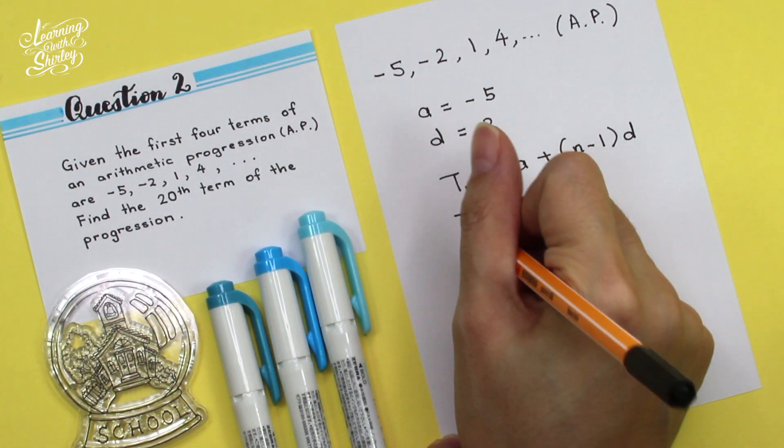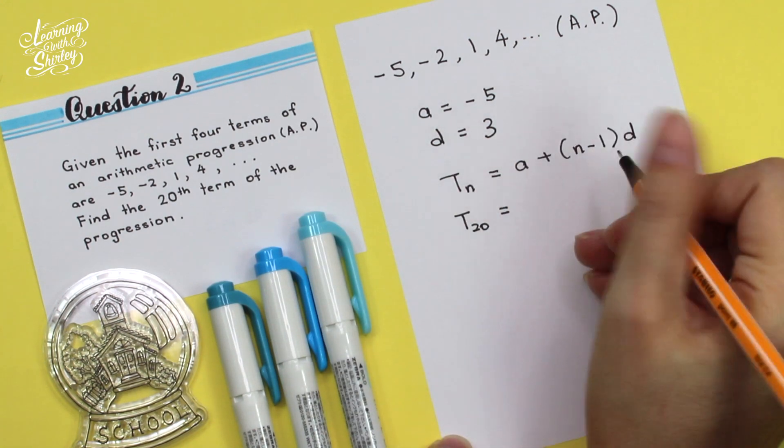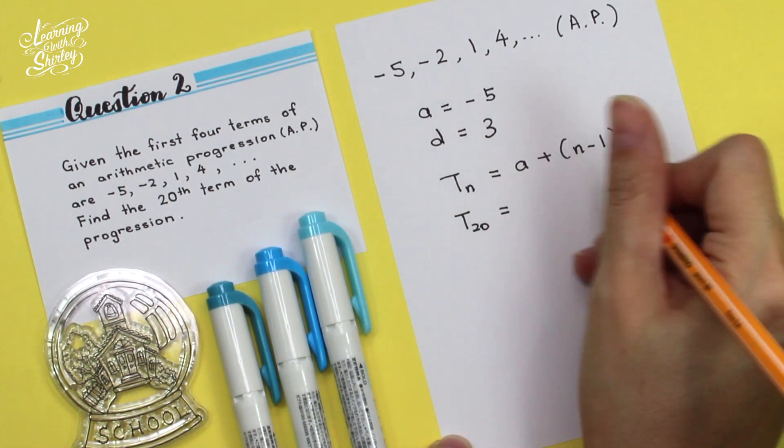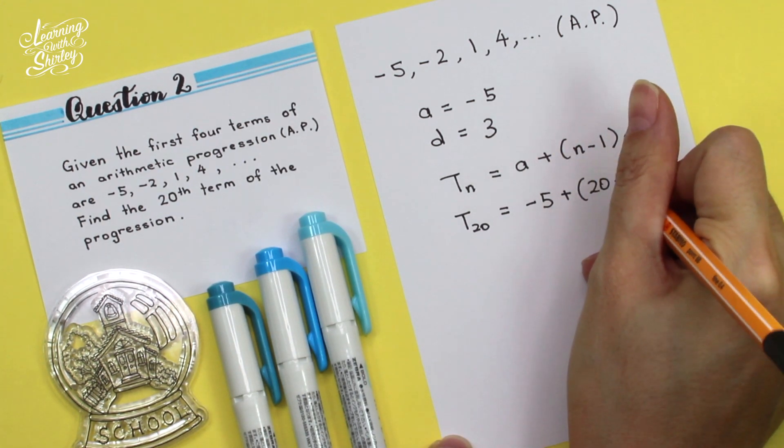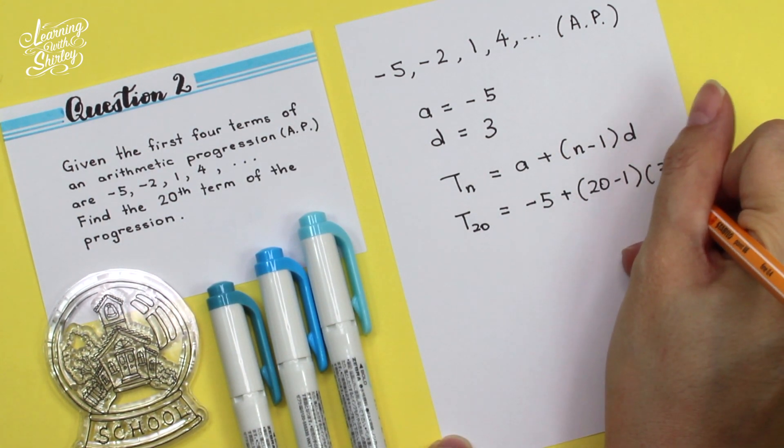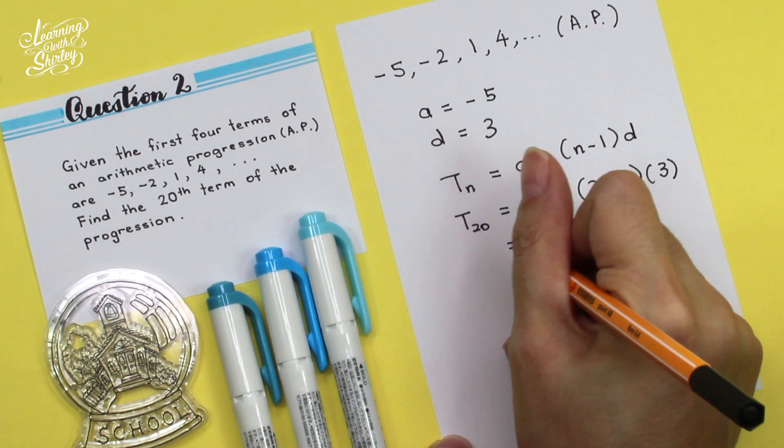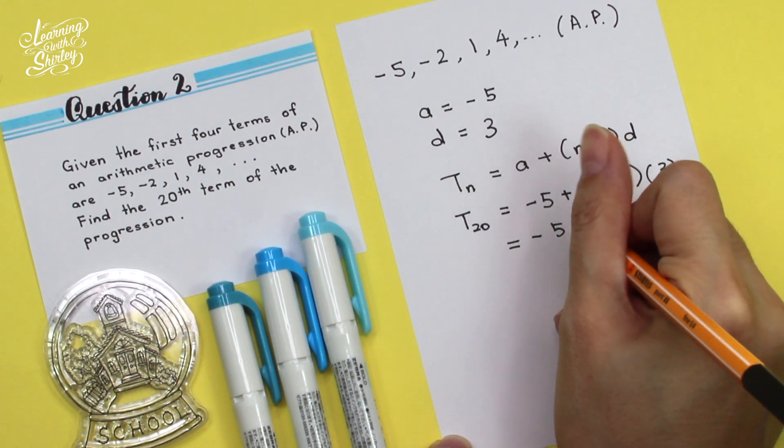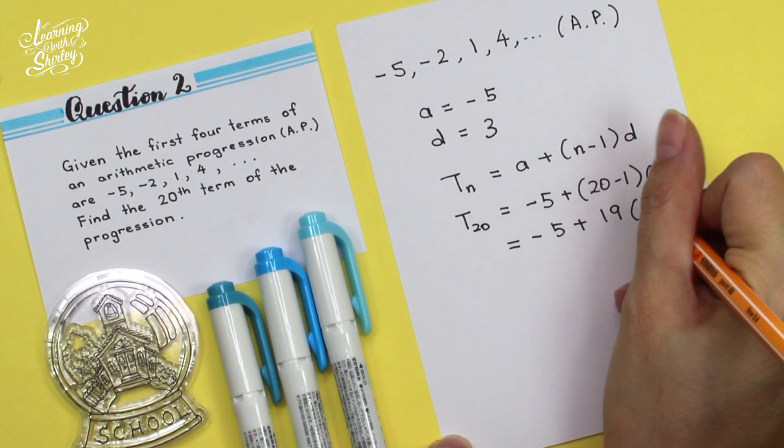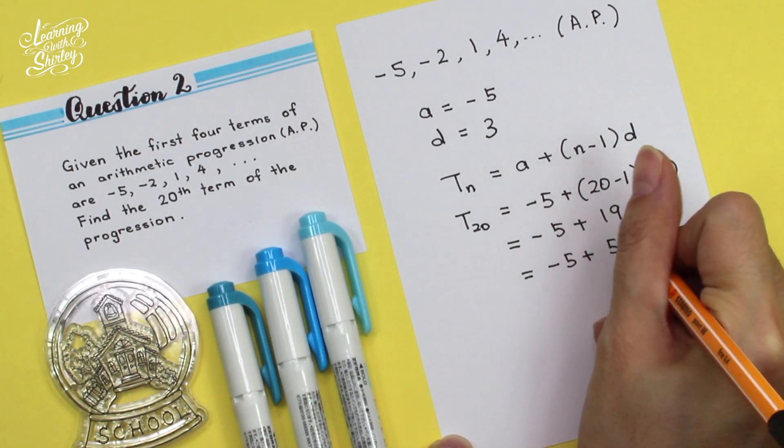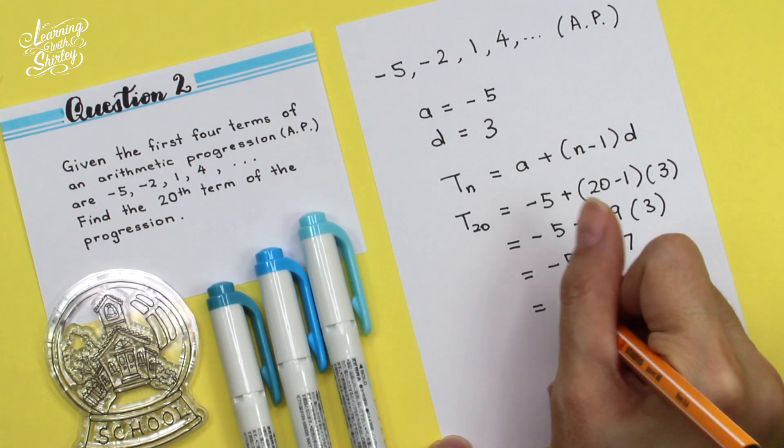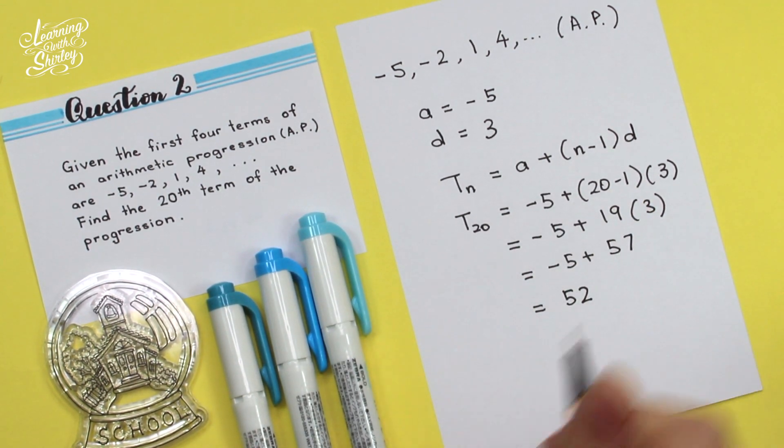So to find T20, we substitute the values of A, N and D. So A is negative 5 plus 20 minus 1, and D is 3. So equals negative 5 plus 19 times 3, equals negative 5 plus 57, which is equal to 52. So this is the answer.